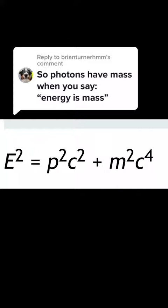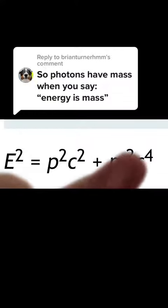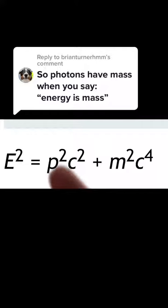But what do these terms mean? Well, E equals energy, m equals mass, and c equals the speed of light. But what's this p? P is an object's momentum. So what this is telling us is that an object's energy is equal to its mass energy and its momentum energy. And when an object is at rest, its momentum is zero — hence we get the familiar E equals mc squared. But when an object is moving, then it has momentum energy.